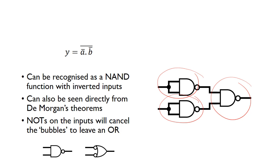You can actually see this one is also given directly from De Morgan's theorems. So the NOTs on the input cancel out. If we put inverters here, these inverters are going to cancel with these, essentially we're left just with this OR function.